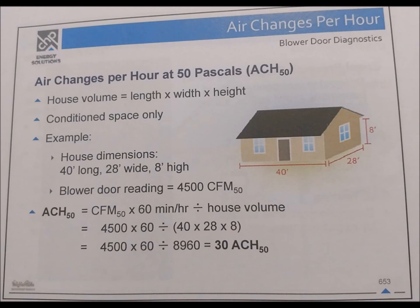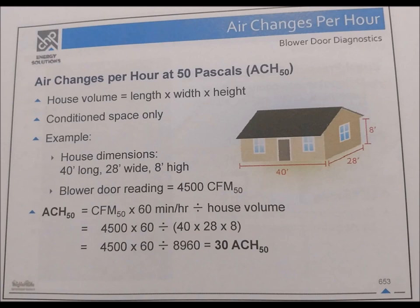Blower door — air changes per hour. ACH50 equals CFM50 times 60 minutes per hour divided by house volume (conditioned space only). House volume equals length times width times height. Example: House is 40 ft × 28 ft × 8 ft; blower door reading is 4,500 CFM at 50 pascals. ACH50 = 4,500 × 60 divided by (40 × 28 × 8) = 270,000 divided by 8,960 equals approximately 30 ACH50.